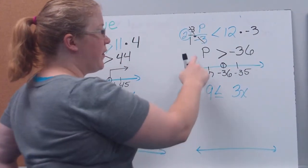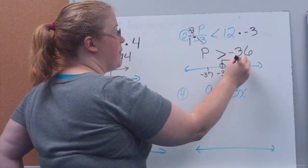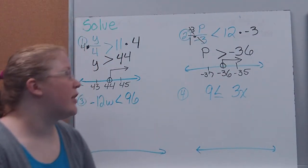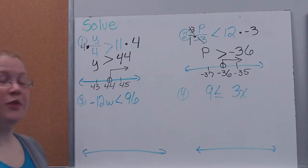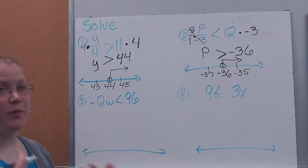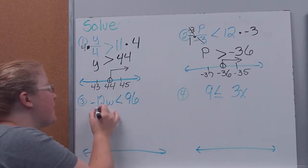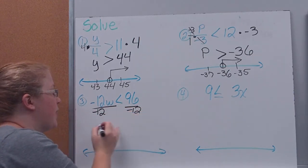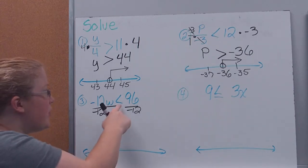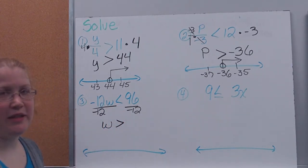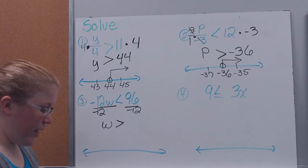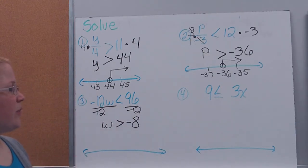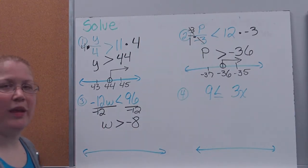Negative 36 is the number I mark on the number line. It's not equal to, so I use an open circle. My variable is on the left, and the sign shows my arrow direction — I'm looking for numbers greater than negative 36, which go to the right. Next, a multiplication example: to isolate w in negative 12 times w is greater than or equal to 96, I divide both sides by negative 12. Dividing by a negative means the sign flip-flops: 96 divided by negative 12 is negative 8, so w is greater than negative 8.